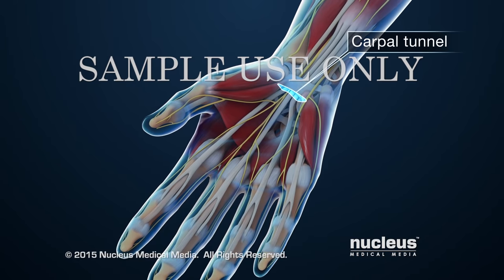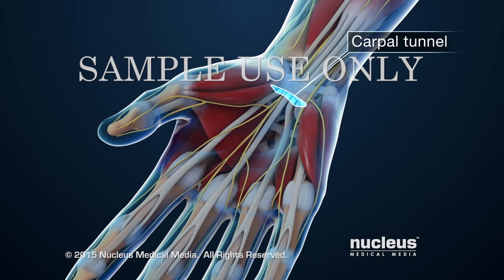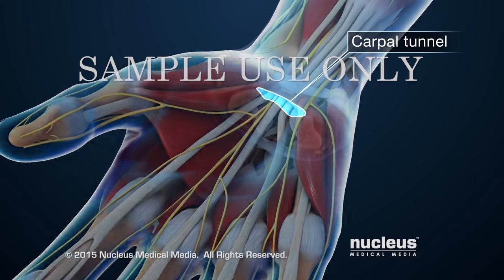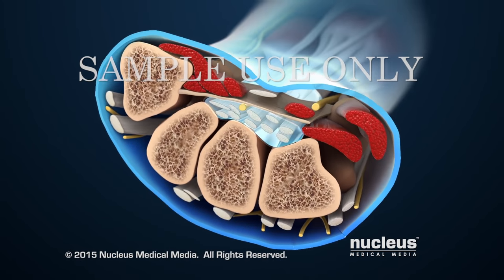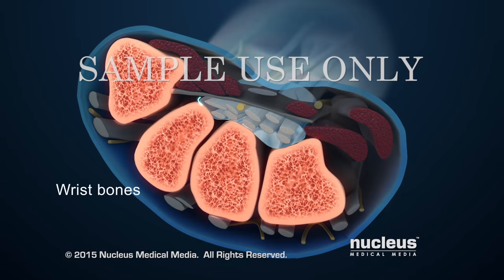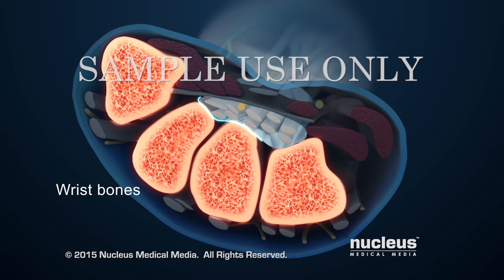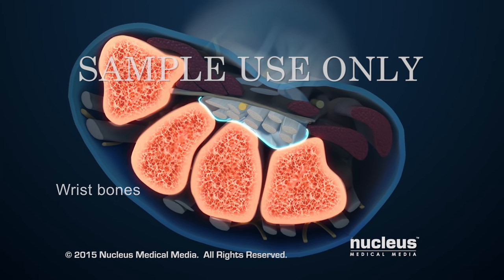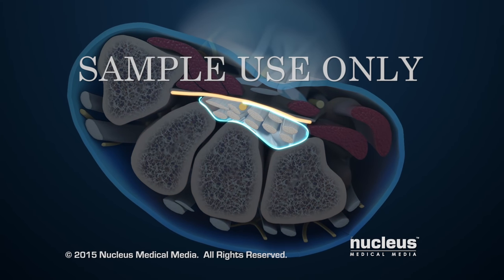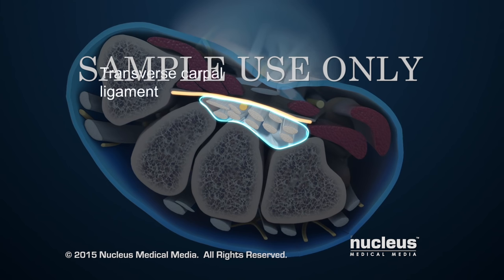The carpal tunnel is a narrow passage in the wrist. It is formed by wrist bones on the bottom and sides and a tough band of connective tissue called the transverse carpal ligament on top.